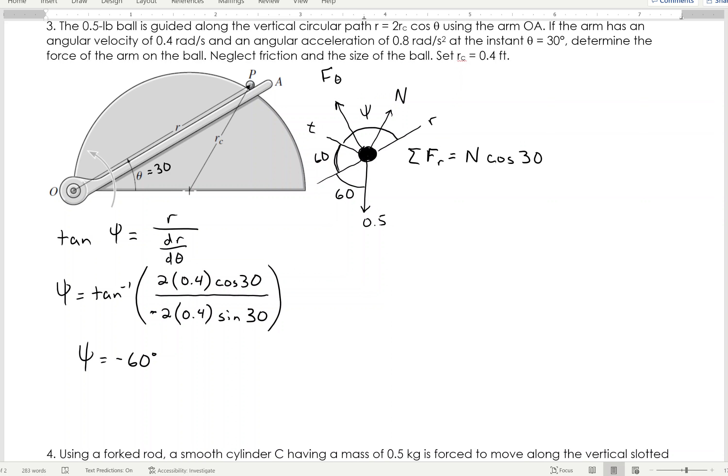So, that's where the cosine of 30 comes from in the R direction. Then, I have the 0.5, that's going in the negative, and that would be the cosine of 60.